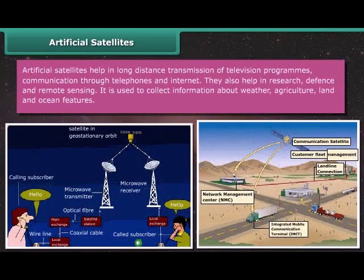Artificial satellites help in long-distance transmission of television programs, communication through telephones and internet. They also help in research, defense and remote sensing. It is used to collect information about weather, agriculture, land and ocean features.